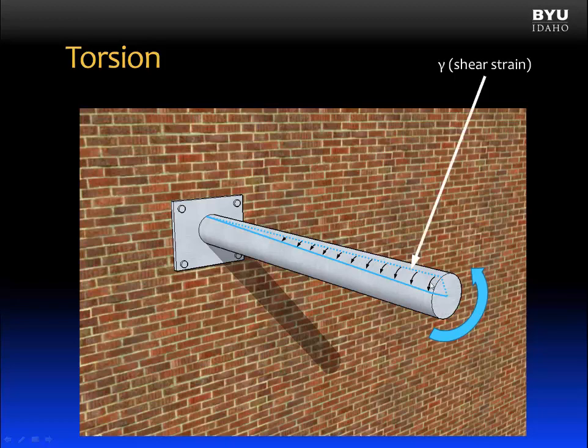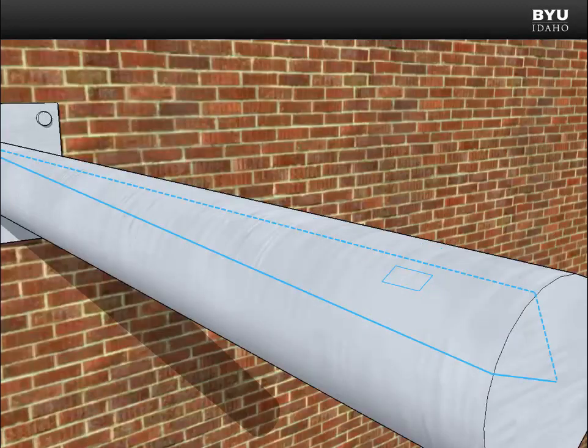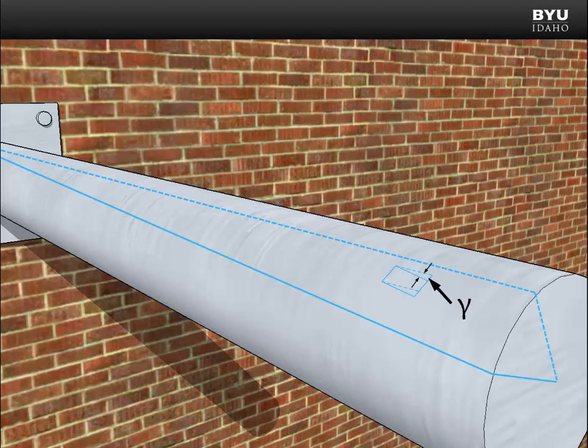Now, this deflection is a shear strain-related deflection. Let's look more closely. If we identify a rectangular element on the surface of the shaft prior to applying the load, then when we apply the torque, that rectangle will deform. This deflection looks like the shear deflection we saw previously in unit one.